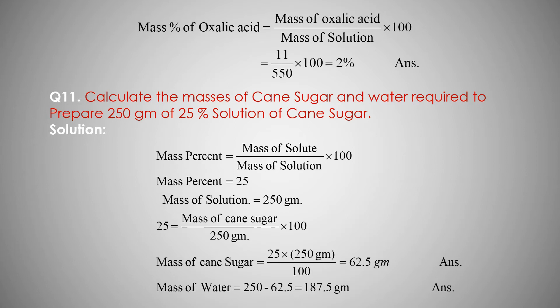Required to prepare 250 gram of 25% solution of cane sugar. Mass percent equals mass of solute upon mass of solution into 100. Mass percentage is 25%, and mass of solution is 250 grams.